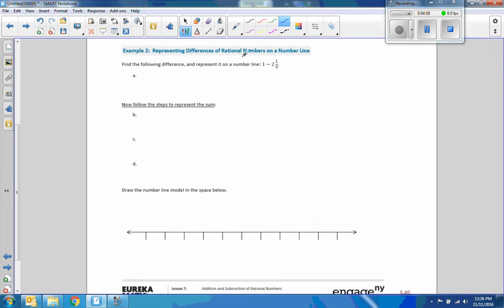Example two. Representing differences of rational numbers on a number-line. Find the following difference and represent it on a number-line. One minus two-and-a-quarter. So, we're going to rewrite this as a sum of one plus negative two-and-one-quarter. Place the tail of the arrow on one and go left two-and-a-quarter to here, which is negative one and a quarter.